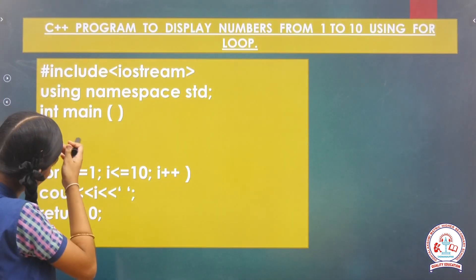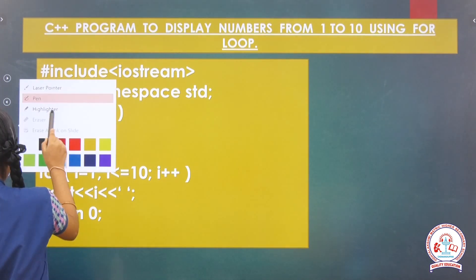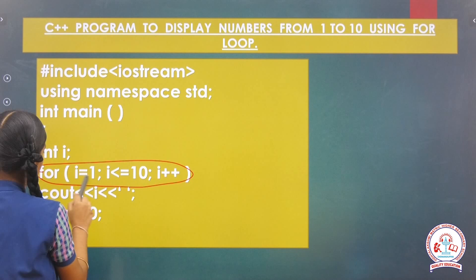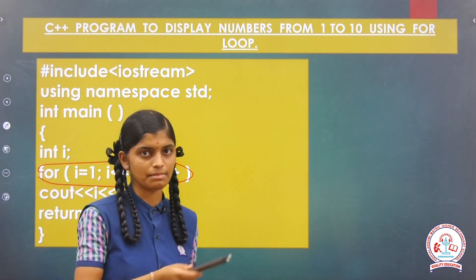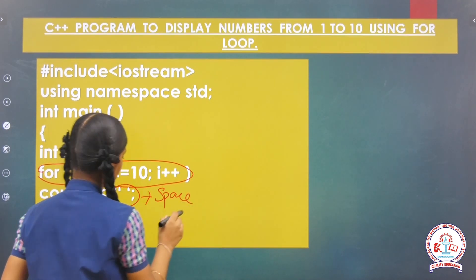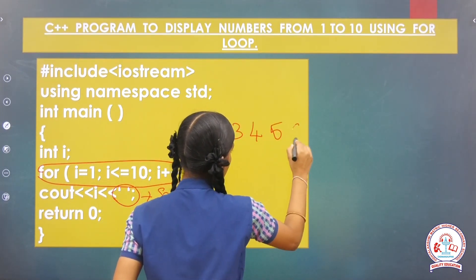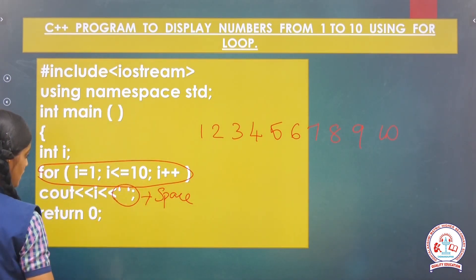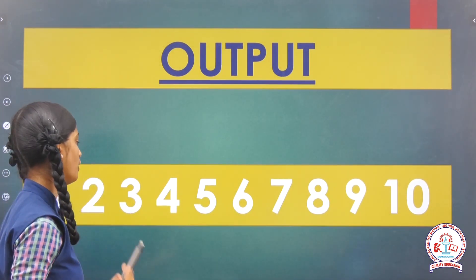Let me see another example program. Here #include iostream, using namespace std, int main, taking variable i. For loop: the condition is i equal to 1, i lesser than or equal to 10, i plus plus, cout i, then give space. Similarly to the last program, but the difference is previously we used endl, but here we use space. This condition will display the output as 1, 2, 3, 4, 5, 6, 7, 8, 9, and 10 in a horizontal way. So the output shows numbers displayed horizontally.